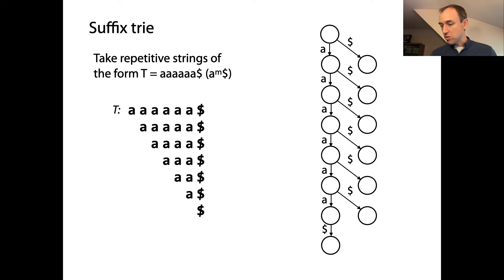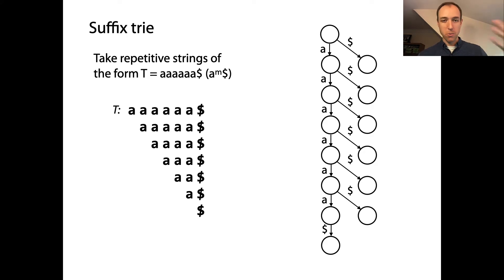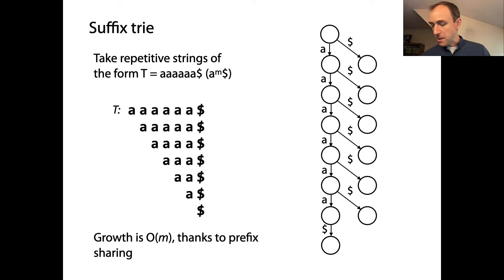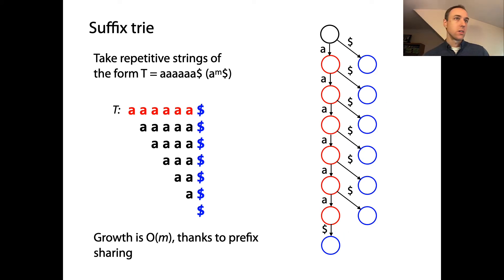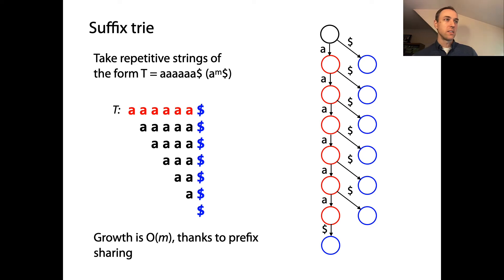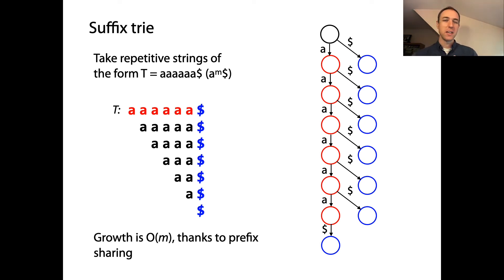To better get a handle on how big this graph is, we can color it: I've used red to represent that backbone of A's, so there's one red node for each A in the text T. Then I've used blue to represent the nodes that are destinations of the dollar sign edges, so there's one such node for every dollar sign. Plus there's a root. So the number of nodes in this trie is approximately 2 times M — it's growing linearly with M. We found a trivial class of strings with maximal prefix sharing where the suffix trie grows linearly with the number of characters in the text.